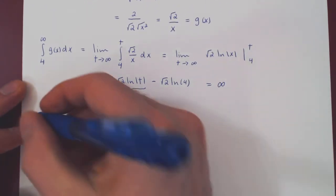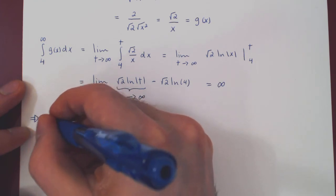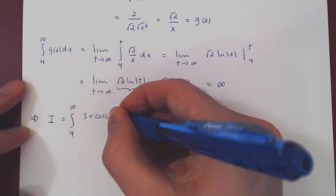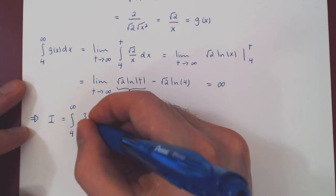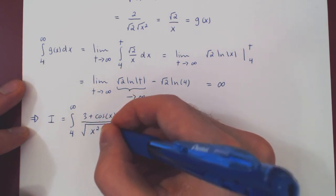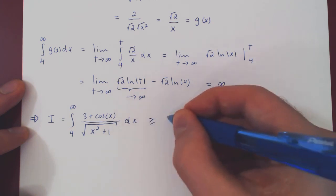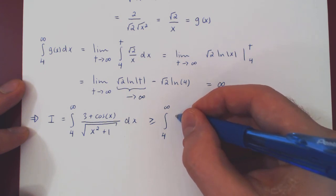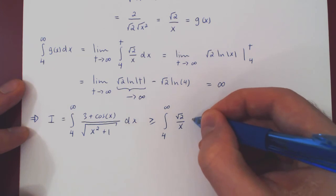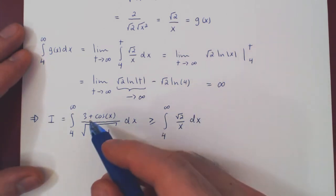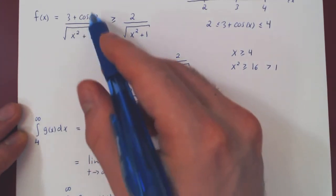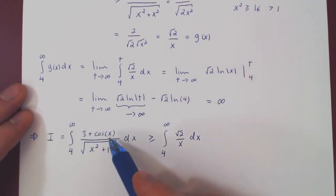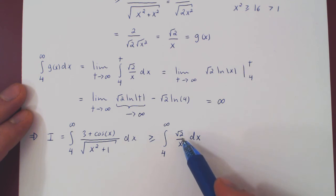And we'll have now our conclusion. And write, this function is bigger than this function. So clearly the integral of the bigger function will give us something bigger than the integral of the smaller function.